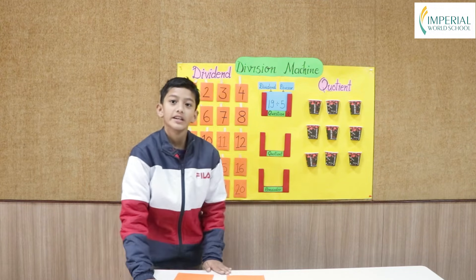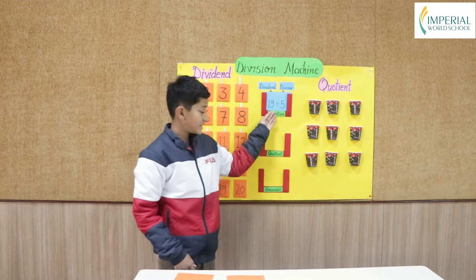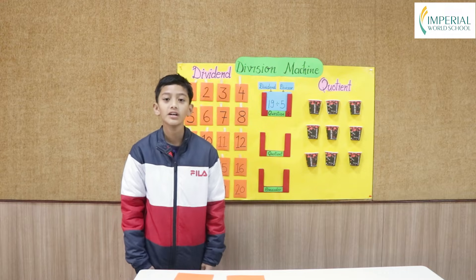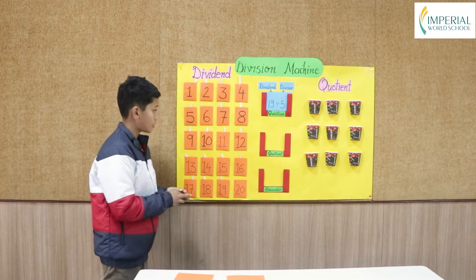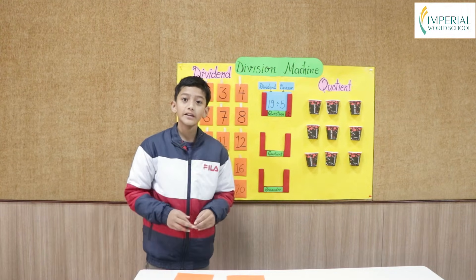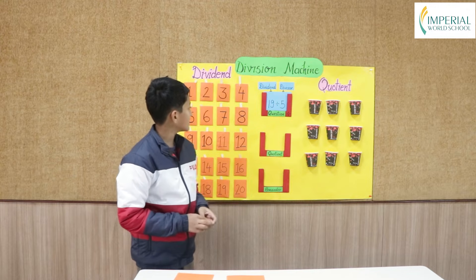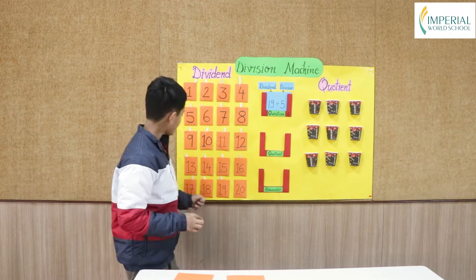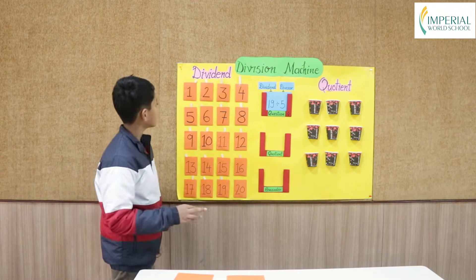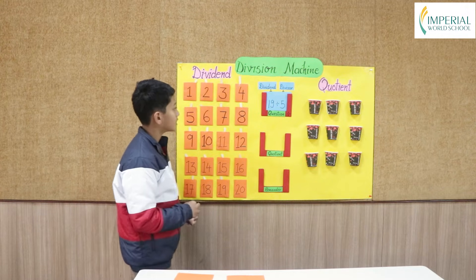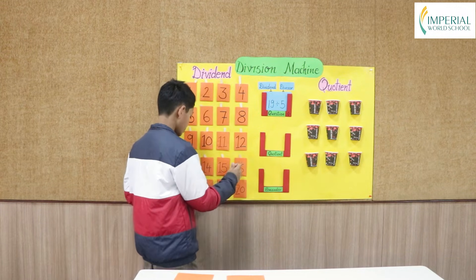So the dividend is 19, so I need 19 popsicle sticks to keep them in the dividend pouches. As 19 is equally divided by 5, I need 5 popsicle sticks from the dividend pouches to keep them in the quotient pouches.